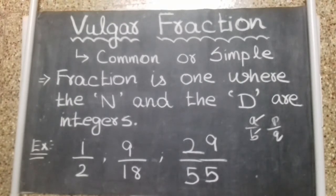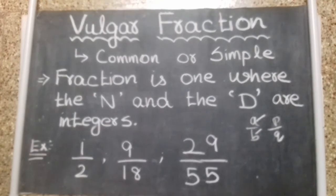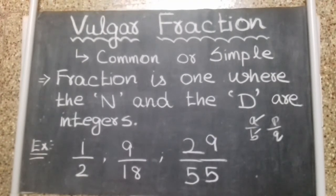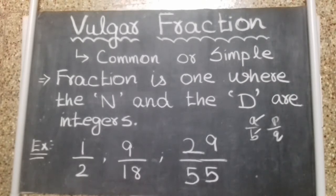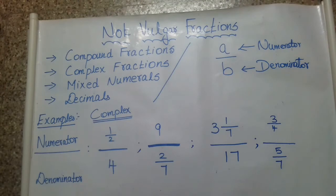Now let's look at a few examples of what is not a vulgar fraction. It is important to know the difference. The vulgar fraction definition is: it is one where the numerator and denominator are integers. What is not a vulgar fraction includes compound fractions, complex fractions, mixed numerals, and decimals. Let's look at examples of each.